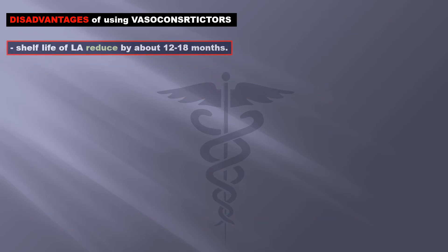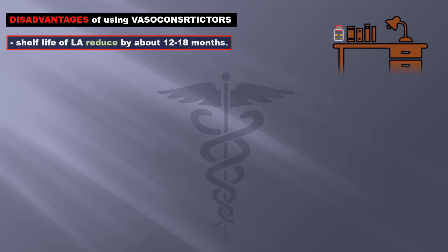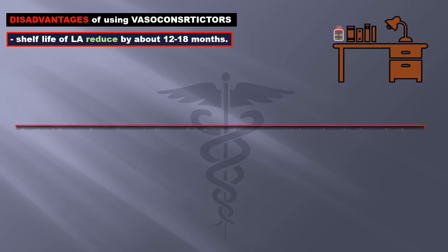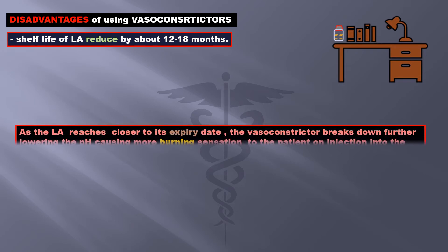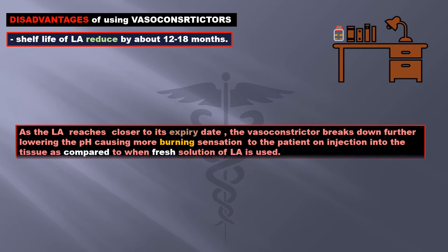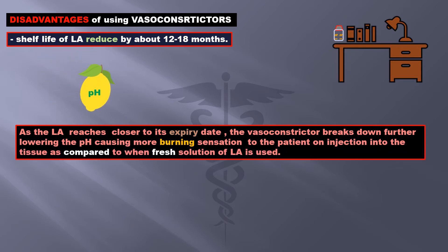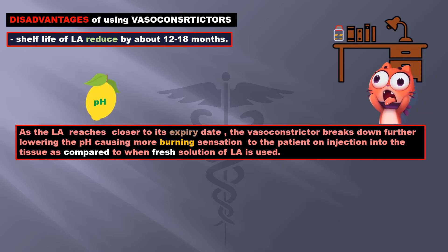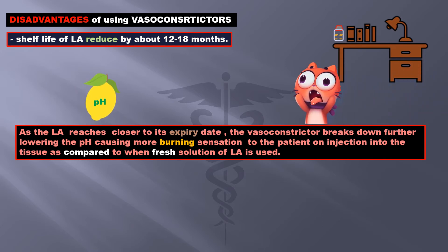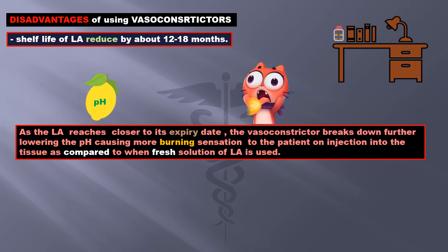Vasoconstrictors reduce the shelf life of LA by about 12 to 18 months. As the LA reaches closer to its expiry date, the vasoconstrictor in it breaks down further, lowering the pH and causing more burning sensation to the patient on injection into the tissue compared to when a fresh solution of LA is used.